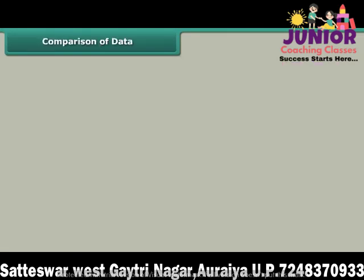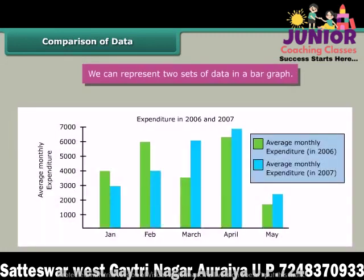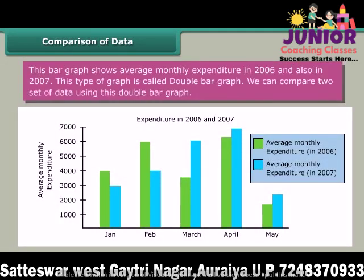Comparison of data. We can represent two sets of data in a bar graph. This bar graph shows average monthly expenditure in 2006 and also in 2007. This type of graph is called a double bar graph. We can compare two sets of data using this double bar graph.